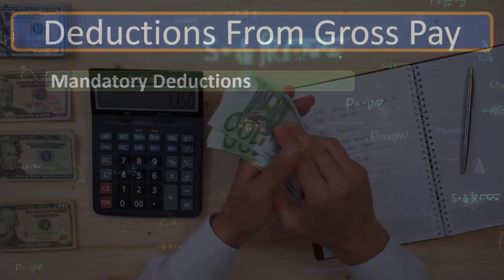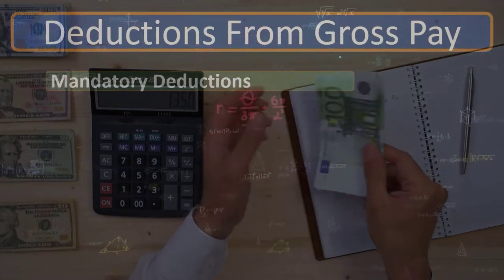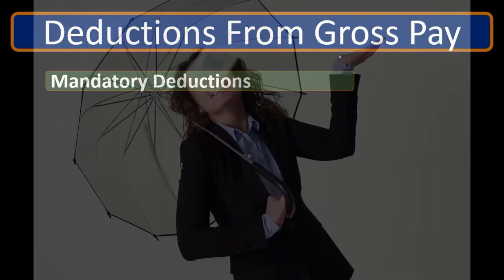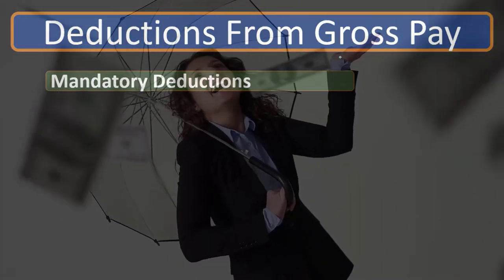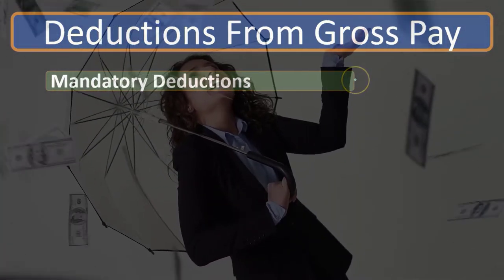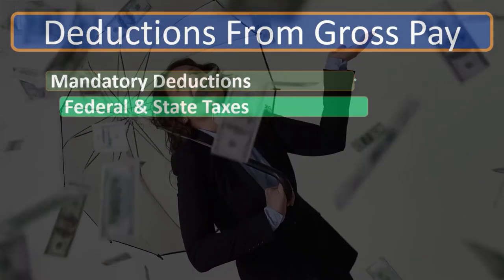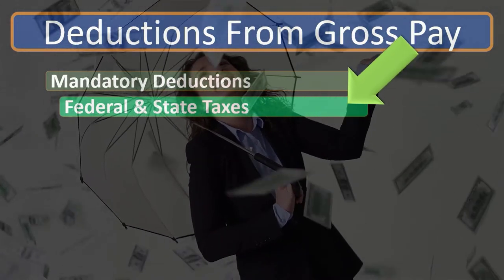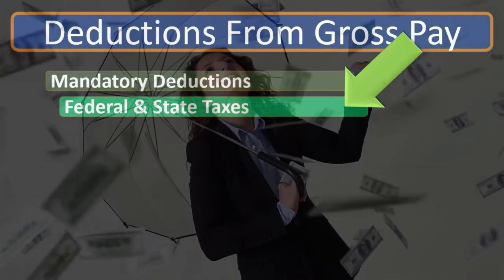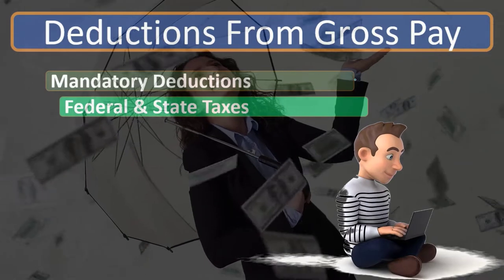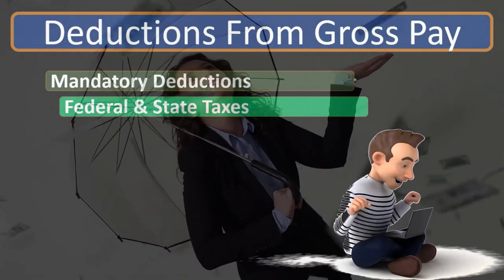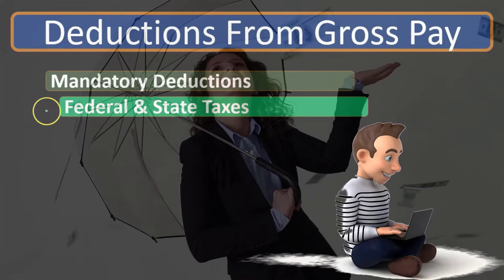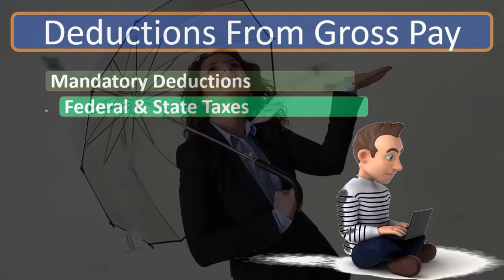So we're getting from gross pay to the end result, which would be net pay. Deductions are going to include things like mandatory deductions, which are federal and state income taxes — deductions by law, deductions we have to have. The business is required to make these types of deductions.